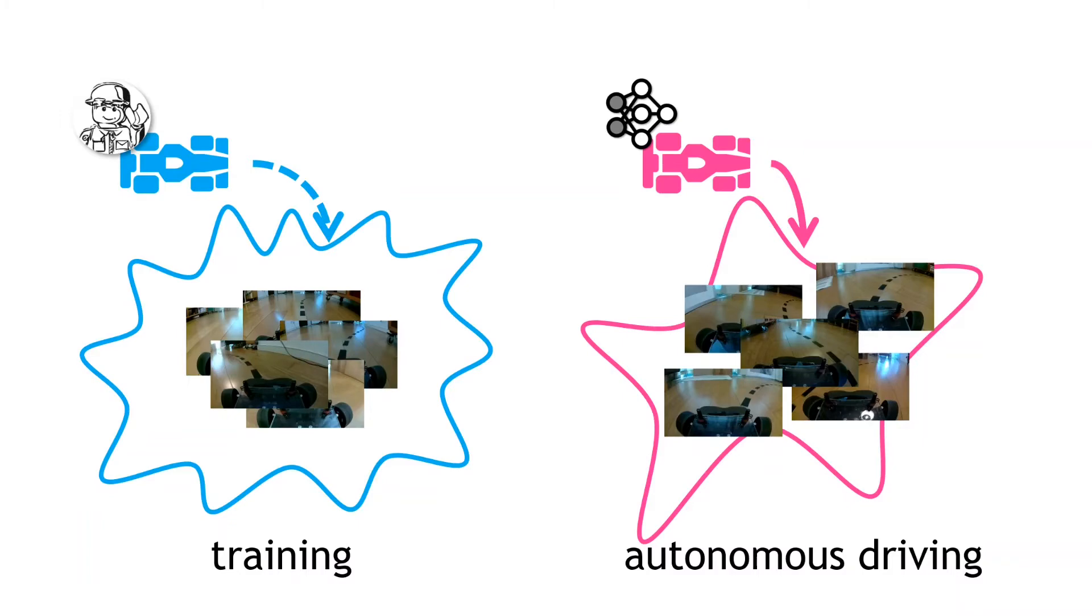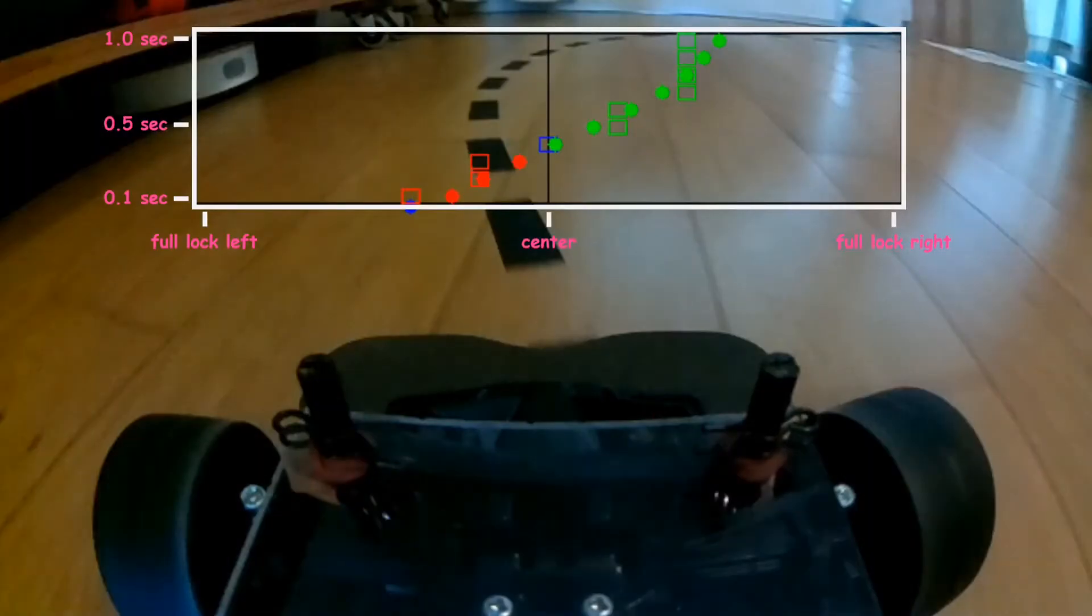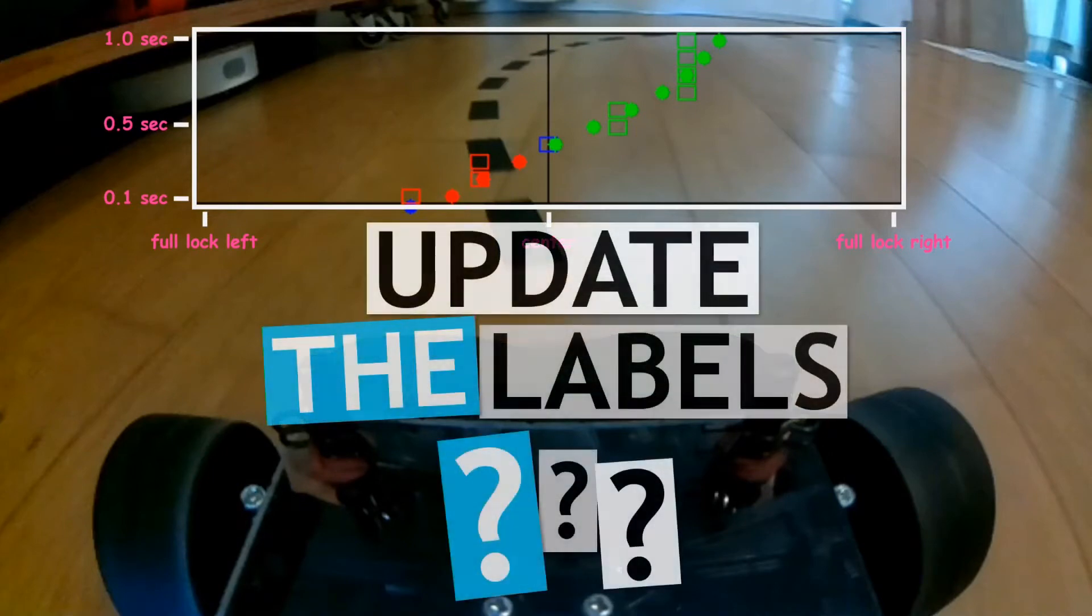So whilst DAGAR sounds pretty straightforward, there is a practical problem. How do we, as the expert driver, actually go about updating or tweaking the labels?